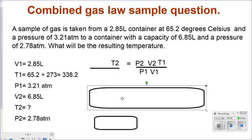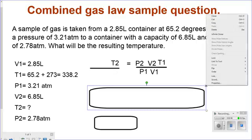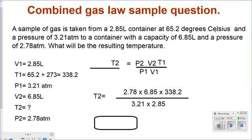I plug in my values, and I end up with 2.78 times 6.85 times 338.2, all of that divided by 3.21 times 2.85.